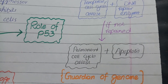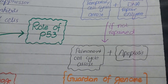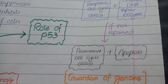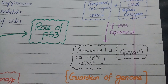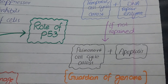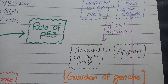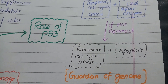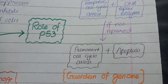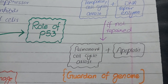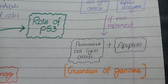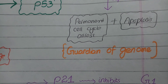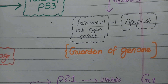Overall, these two strategies by p53 help to limit damage to DNA. Otherwise the cells with damaged DNA would keep on dividing to form a colony of mutated cells, which is called neoplasia. As p53 helps to limit the proliferation of cells with a damaged genome, it is also known as the guardian of the genome.